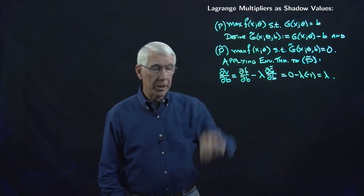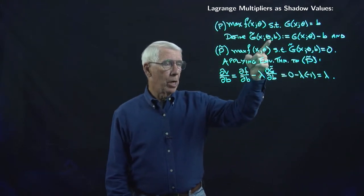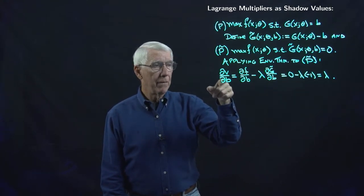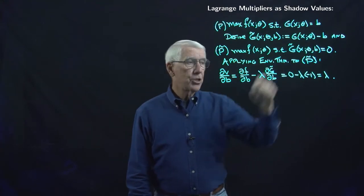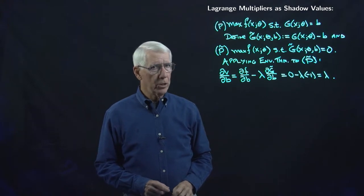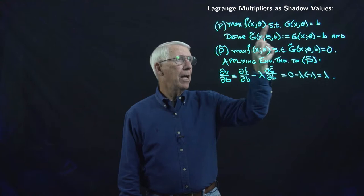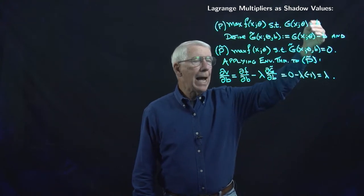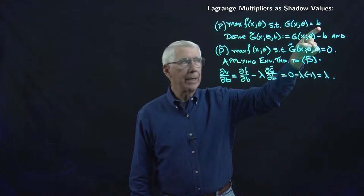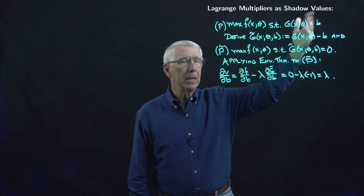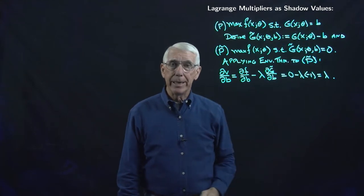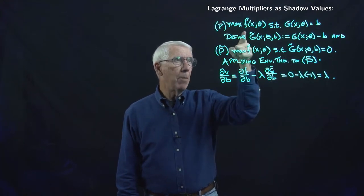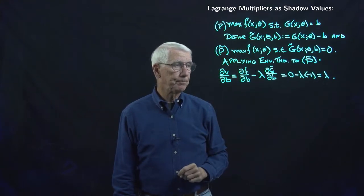Just as we said, the value of the Lagrange multiplier is the derivative of the value function with respect to the right-hand side. We call this a shadow value or marginal value, because it tells us how the objective value will change in response to relaxing or tightening the constraint — that is, by increasing b. If we had an additional unit of whatever b represents, this tells us how much that would enable us to increase the value of the objective function.